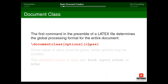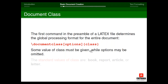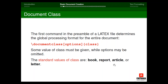A LaTeX source file begins with \documentclass, followed optionally by options in square brackets and the class in curly braces, then a preamble, then \begin{document} and \end{document}. The document body is written between \begin{document} and \end{document}. For example, writing 'life is beautiful' between those commands displays exactly that. Anything written after \end{document} will not be executed.